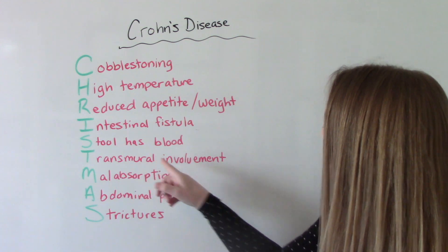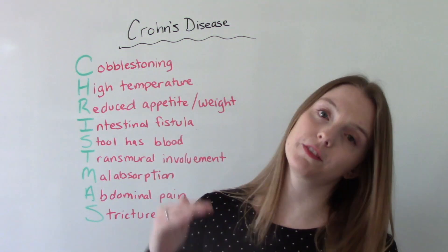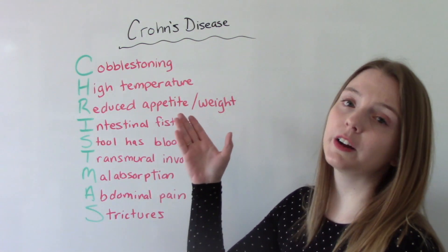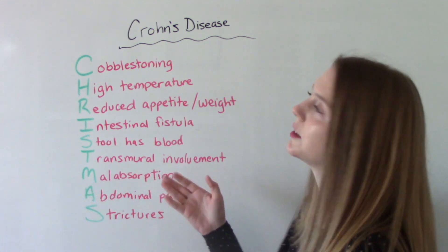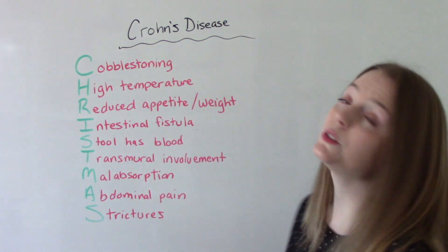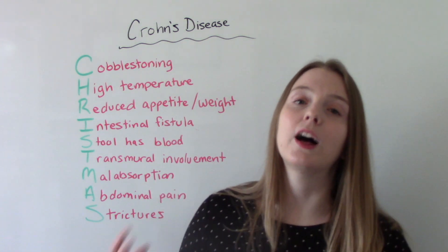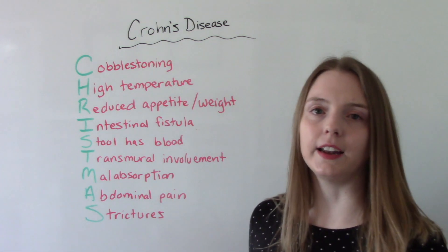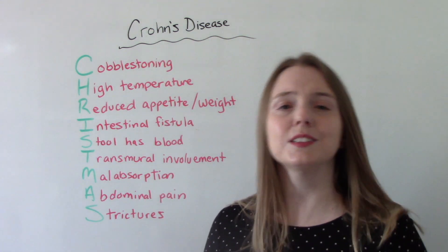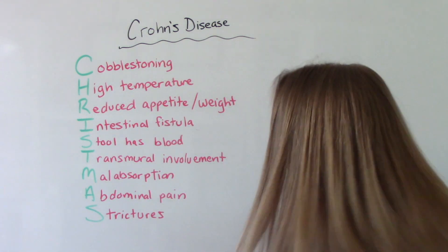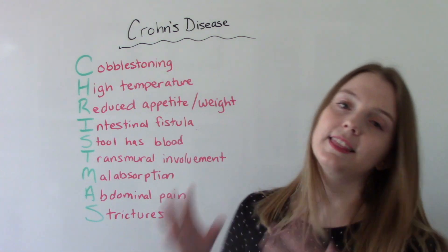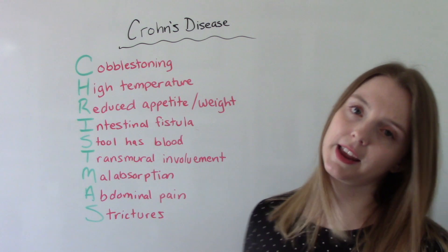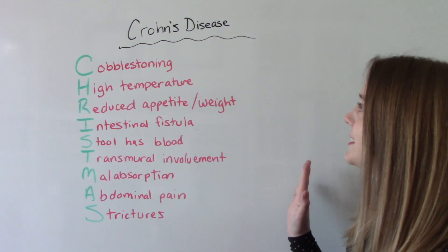T is for transmural involvement — many layers of the bowel can be involved. M is for malabsorption: they're not eating very much, and when they do eat, that food isn't being absorbed properly, so they're losing weight and their body isn't using those nutrients the way it should. A is for abdominal pain — having inflamed bowels is very painful. And S is for strictures, which is the narrowing of the intestine, which can also cause more problems and pain for our patient.